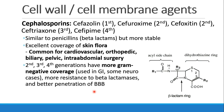Cephalosporins are also beta-lactams, and they come in multiple generations. An example of each is listed here. Cefazolin is first generation, cefuroxime is second generation, cefoxitin is also second generation, ceftriaxone is third generation, and cefepime is fourth generation. These are similar to penicillins, although somewhat more stable. They're excellent for coverage of skin flora, and they really are the drug of choice for cardiovascular, orthopedic, biliary, pelvic, and intra-abdominal surgery.